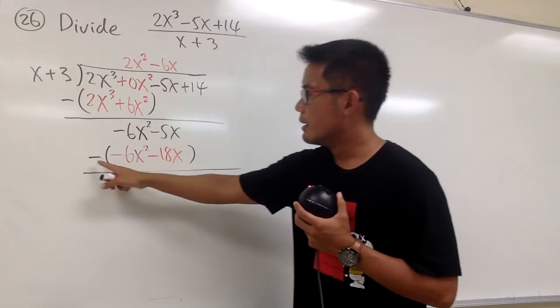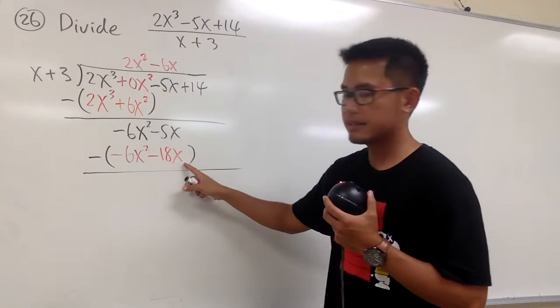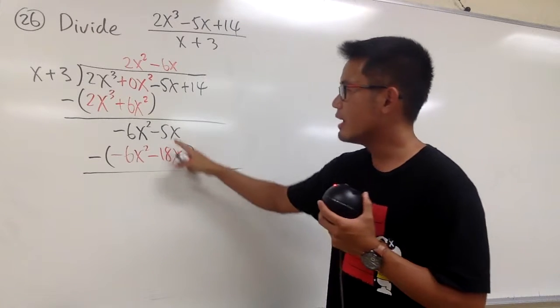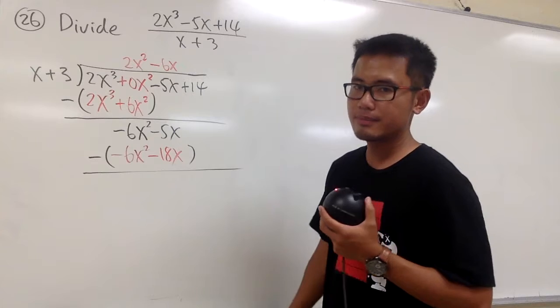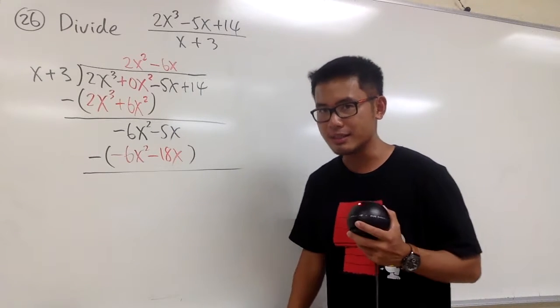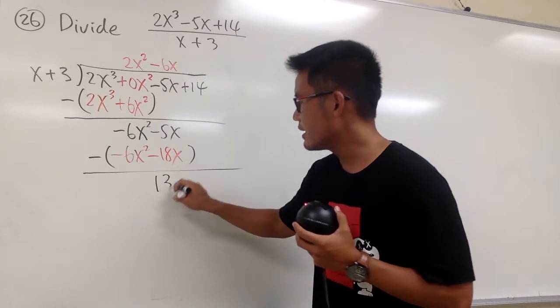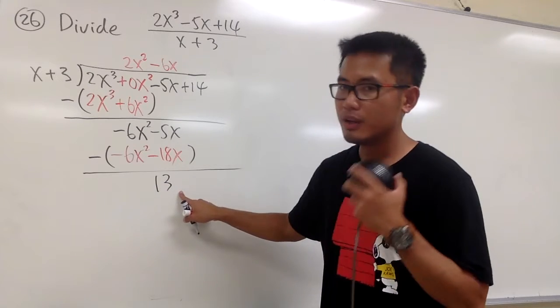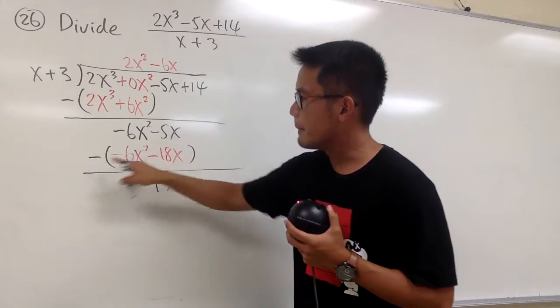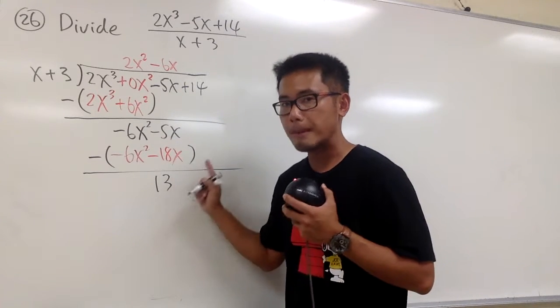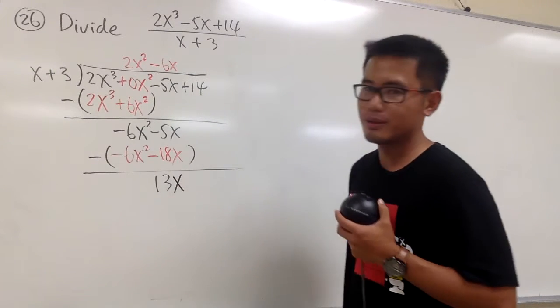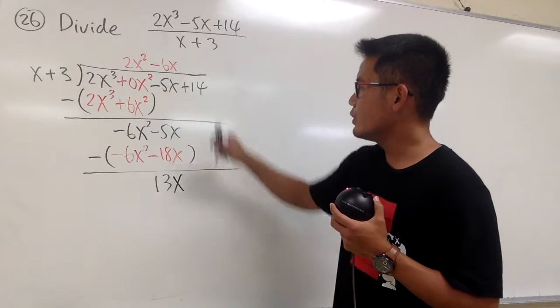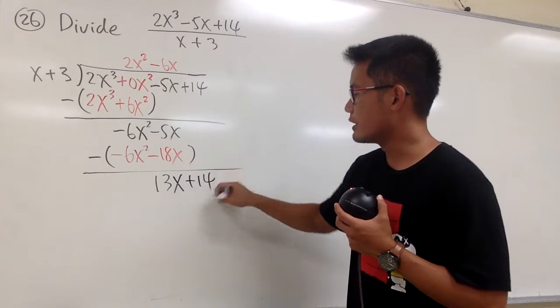And we do this. Negative 5x minus a negative 18x, which is the same as negative 5x plus 18x. Negative 5 plus 18 is what? 13. It's a positive 13. Once again, it's negative 5 plus 18, which is a positive 13, right? And then, we can put down, this is the x term right here. And to continue, we bring down the plus 14.